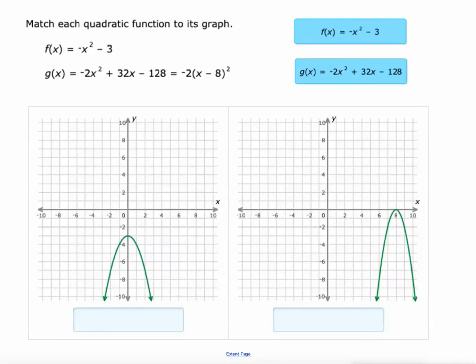All right, well that doesn't help us on the second example. They're both negative. They both have a lead coefficient that's negative and they're both pointing down, but there are some other things that might help us.